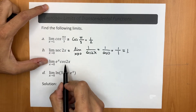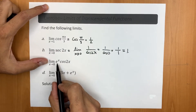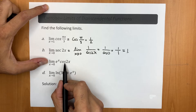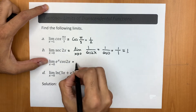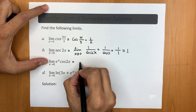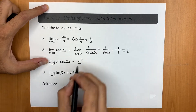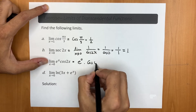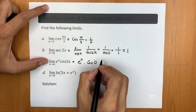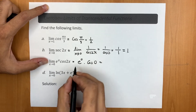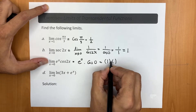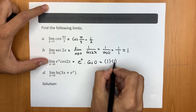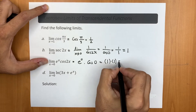The next exercise involves the limit of an exponential function multiplied by a trig function. We follow the same argument and substitute 0 for x, giving e^0 times cosine(0), which is 1 times 1, so we end up with 1.